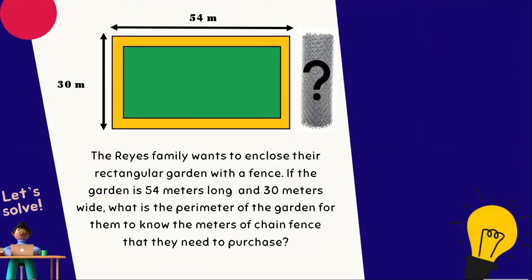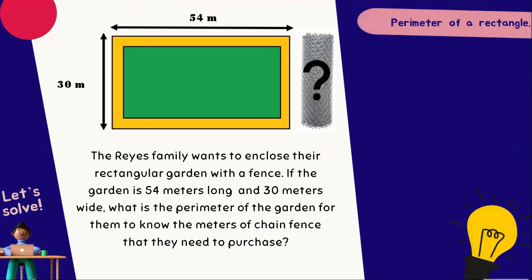In this situation, since we are tasked to find for the perimeter of a rectangular garden, therefore we can use the formula of the perimeter of a rectangle. A rectangle has two lengths and two widths that are the same. And with that, we can make use of this given process. Perimeter of a rectangle is equal to L plus L plus W plus W, where L stands for length and W stands for width.